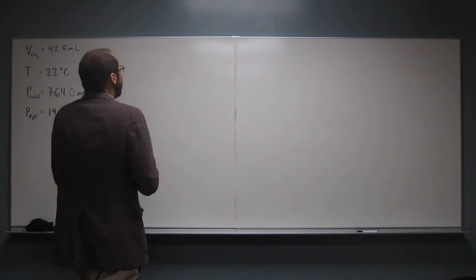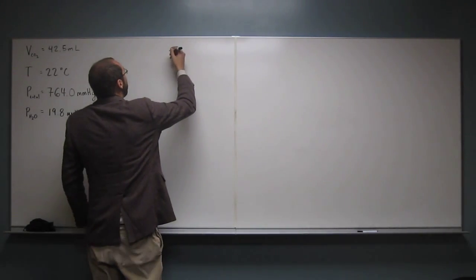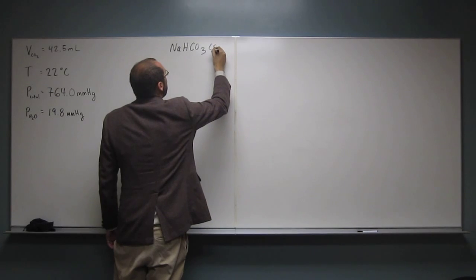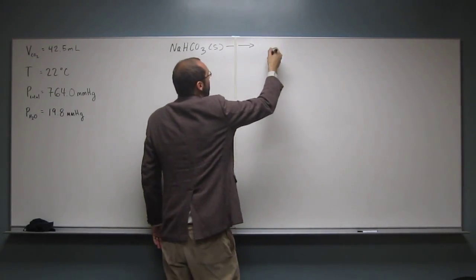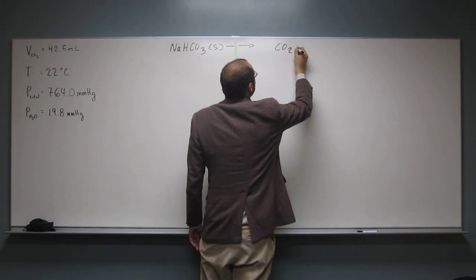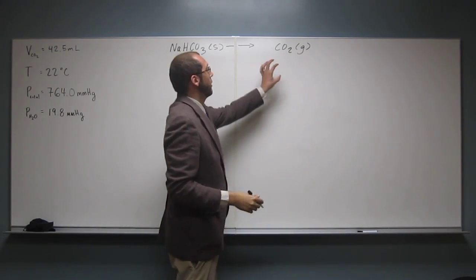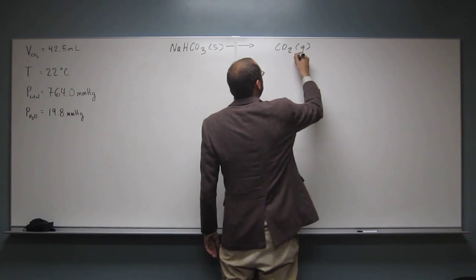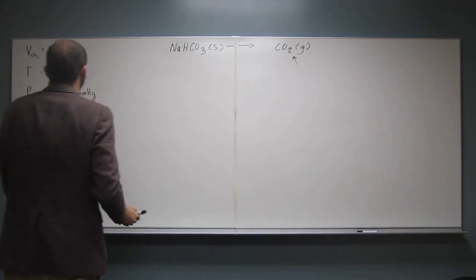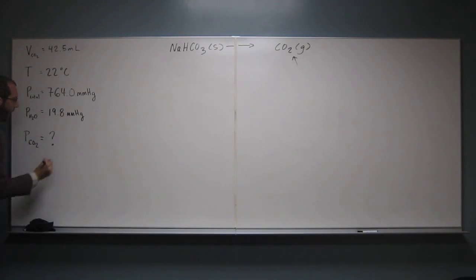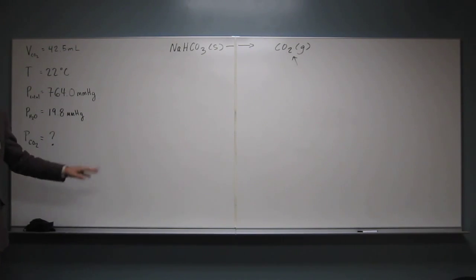Remember, the decomposition of baking soda — sodium bicarbonate — goes to something, something, something, and carbon dioxide. This is what we're interested in, so we don't really need to balance the equation. We just need to know that there's carbon dioxide gas, and that's going to exert some sort of pressure. In order to start this problem, we need to figure out the pressure of the carbon dioxide gas. The first thing we're going to do is use Dalton's Law to figure that out.